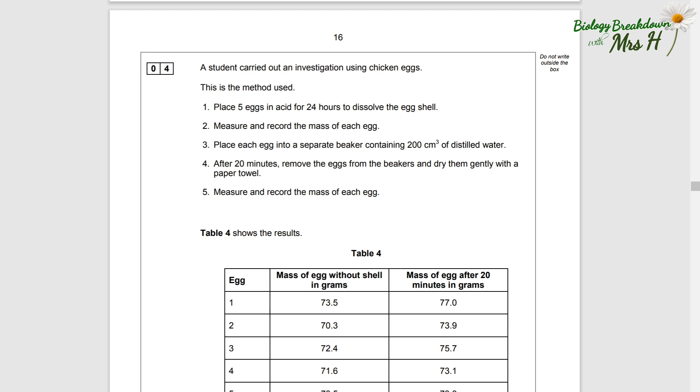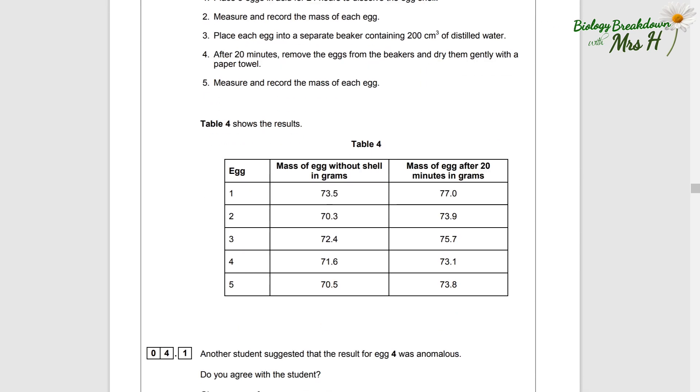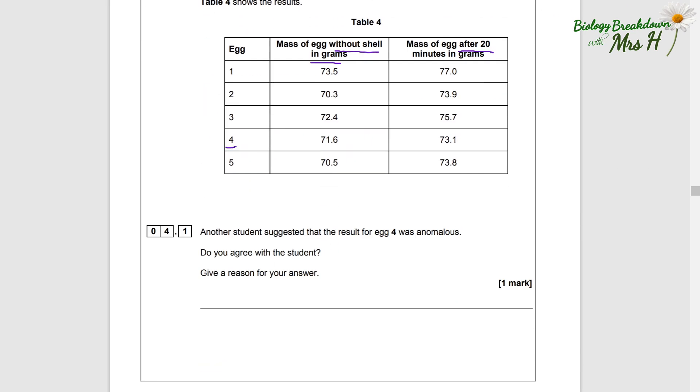Five: measure and record the mass of each egg. So the eggshell was completely removed, then we measured the mass of each egg, popped it into distilled water, left it for 20 minutes, then measured the mass again. Right, got it. And there are five eggs, and the table is showing the mass before putting it in water and the mass after putting it in water.